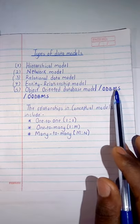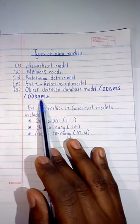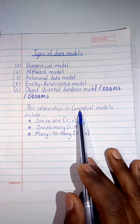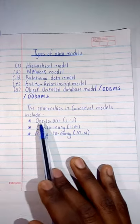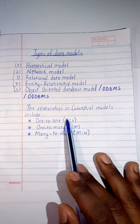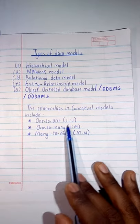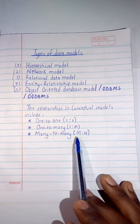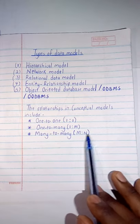Then we are having the relationships in conceptual models which include one-to-one which is represented by 1:1, then one-to-many which is represented as 1:M, then many-to-many which is represented as M:N.